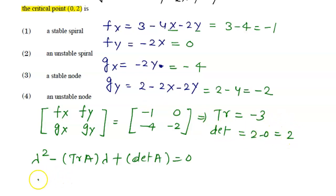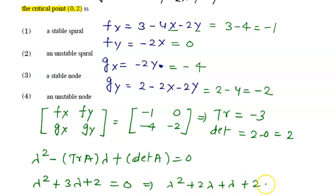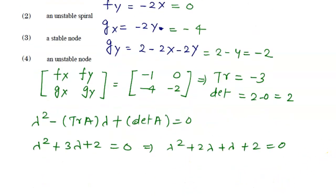The trace is minus one minus two, which equals minus three. The determinant is two minus zero, which equals two. Substituting, we get lambda squared plus three lambda plus two equals zero. This is our characteristic equation. Factoring: lambda squared plus two lambda plus lambda plus two equals zero, giving two eigenvalues.